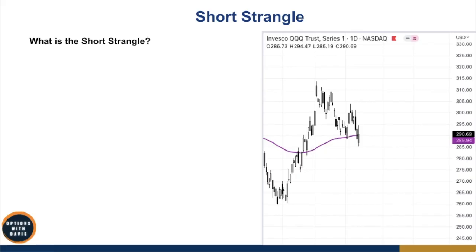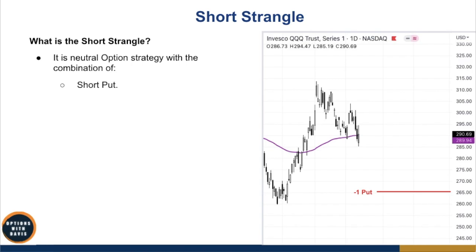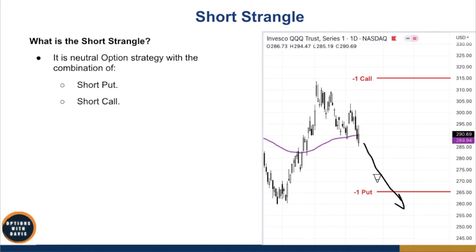So what is the short strangle? The short strangle is a neutral option strategy with the combination of a short put and a short call. If you've already been used to selling short put options, the short strangle is basically just selling an additional call option on top of that. Because when you do it this way, you are also helping with the downside risk. For example, if you sell a put option and the market happens to tank and goes past your short put, if you only had the short put option, then your losses can be pretty big. But if you were to just sell an additional call on top of your put option, now this becomes a strangle.